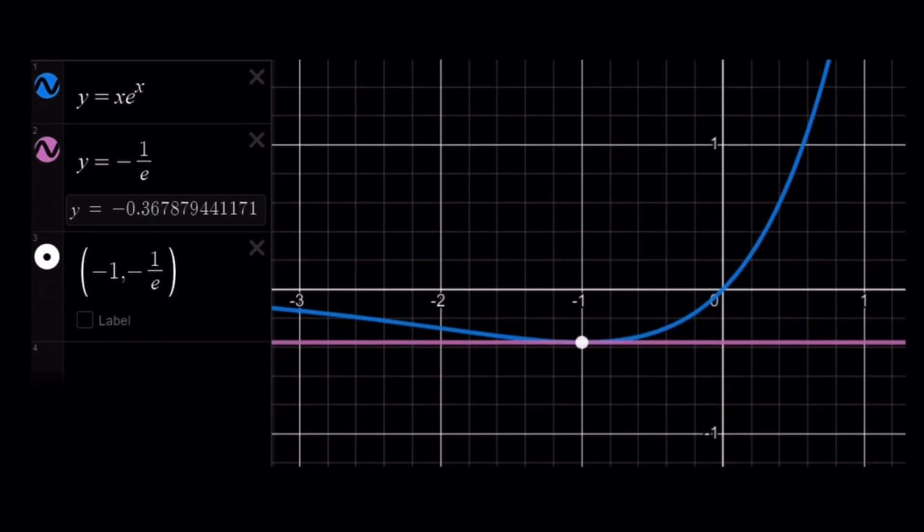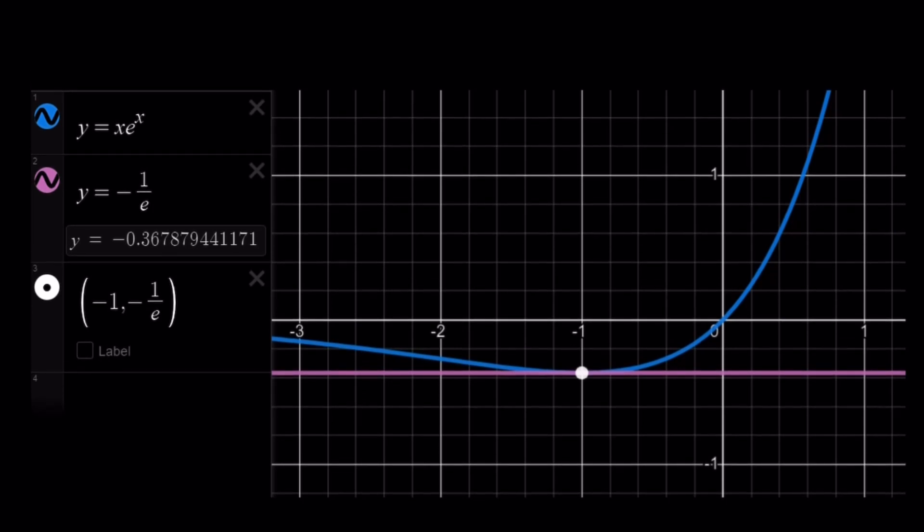Here's a graph of y equals x times e to the power of x. And as you can see, our horizontal line, which is y equals negative 1 over e, is tangent to the curve at negative 1 comma negative 1 over e. And that means the solution is x equals negative 1. And this brings us to the end of this video.